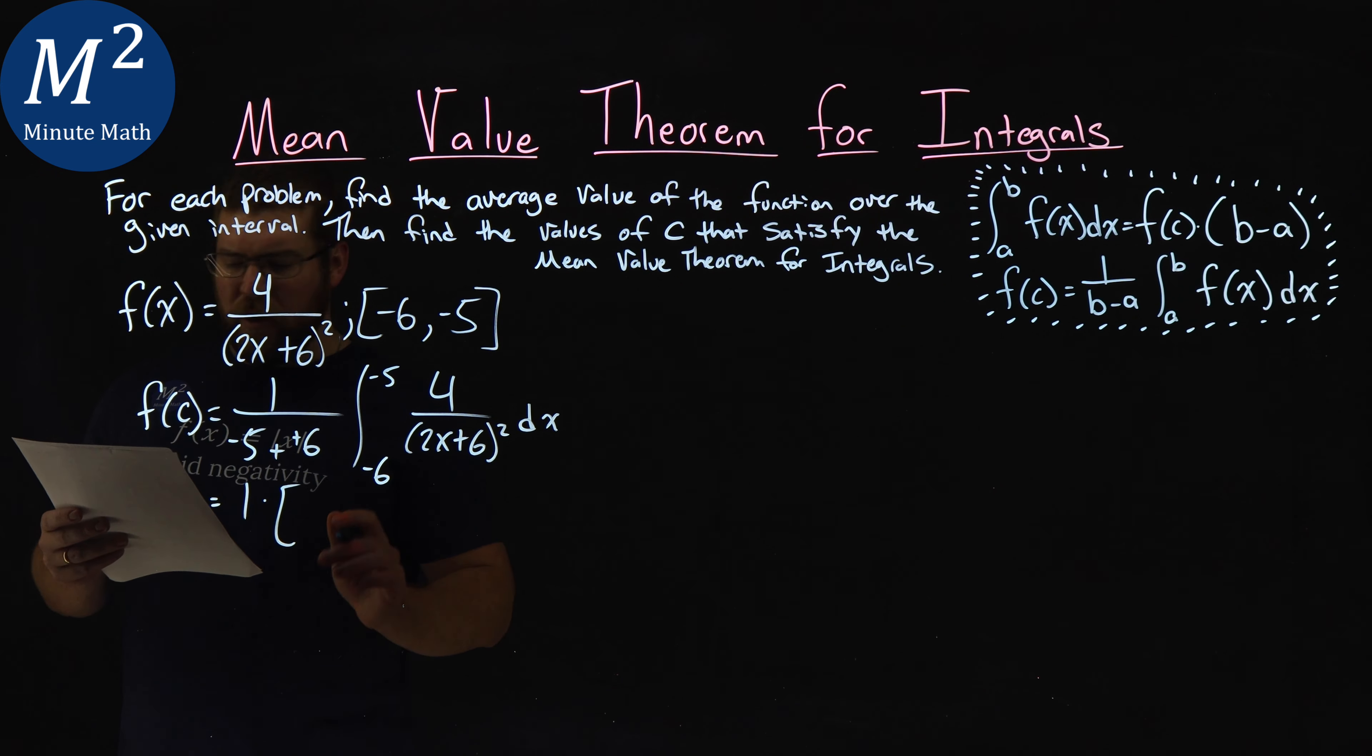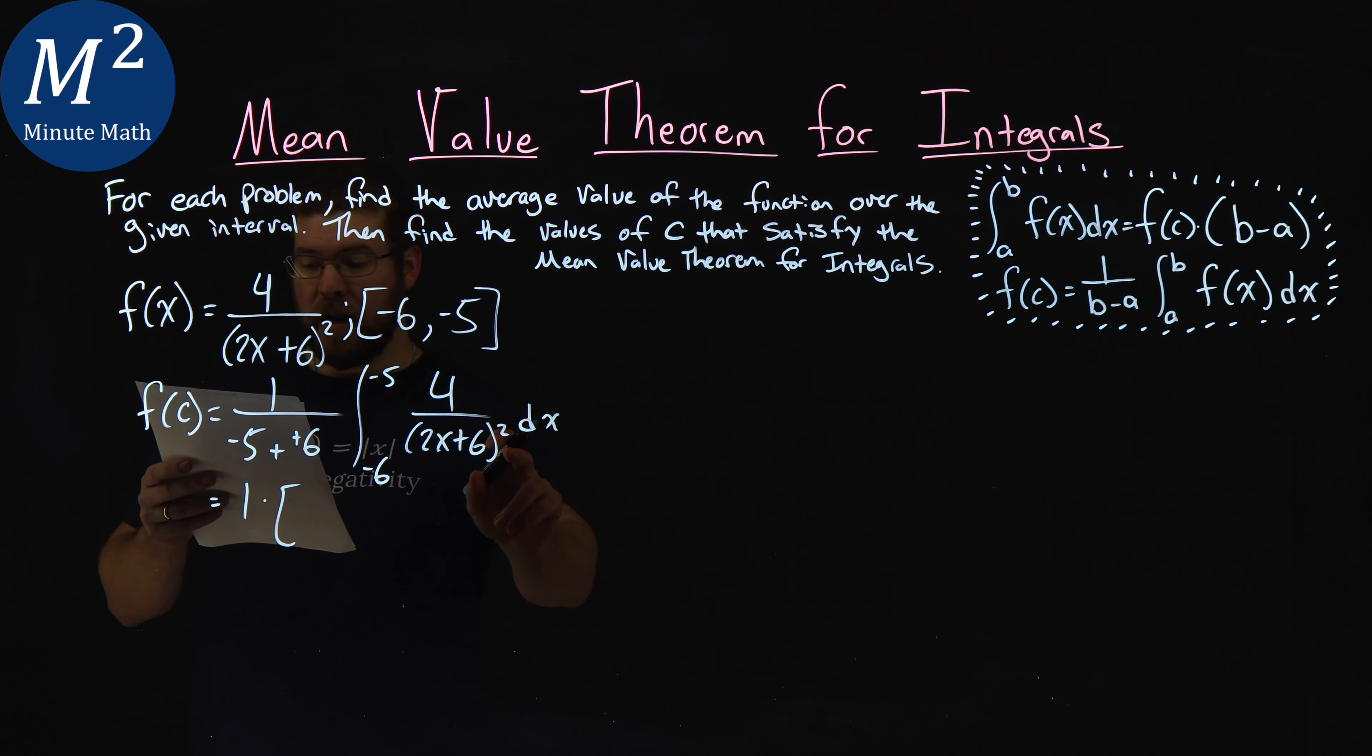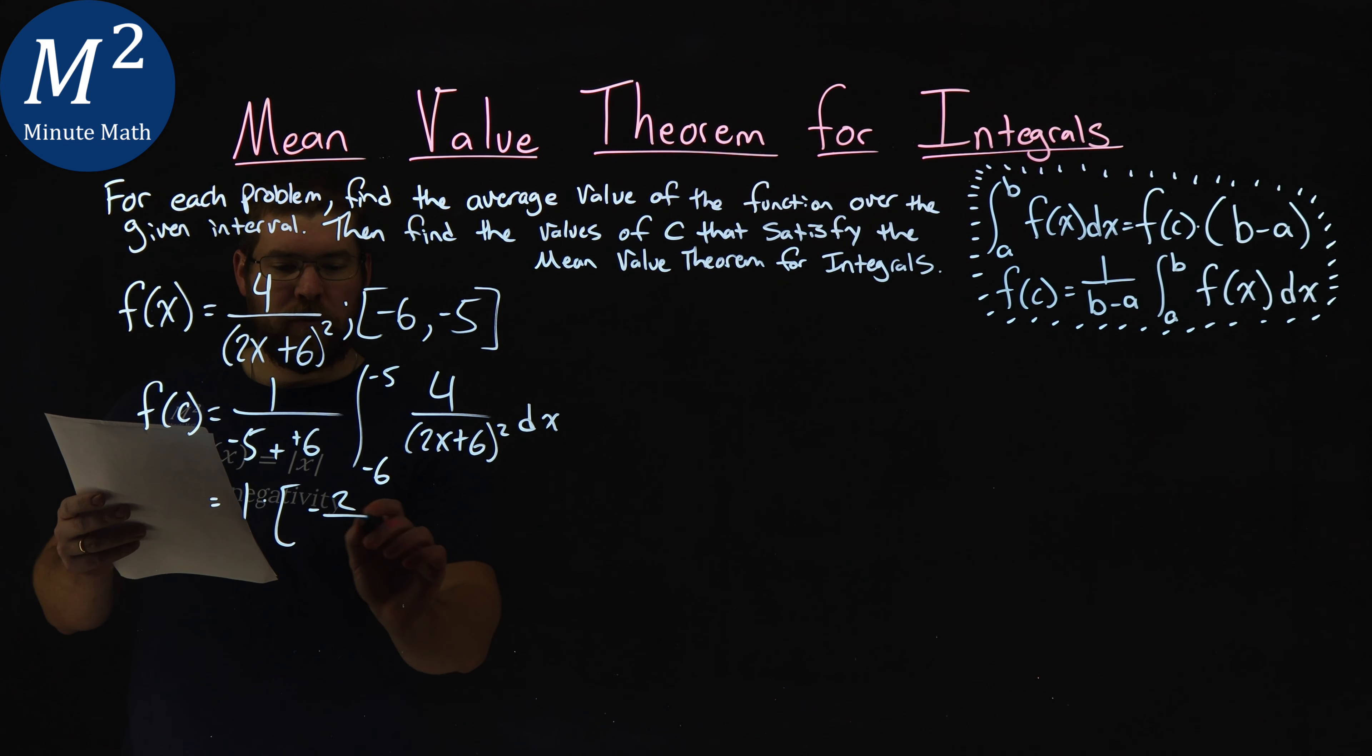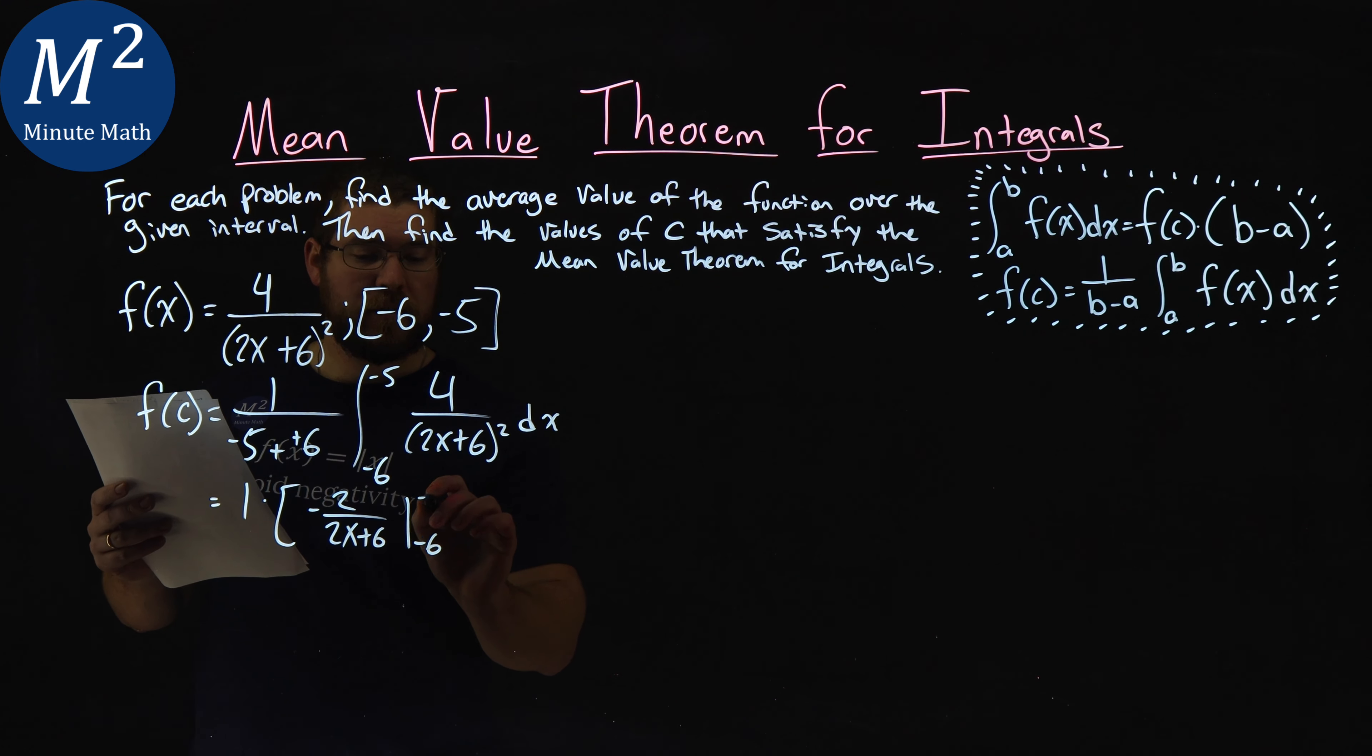Then, I found the integral here for you, and the integral of 4 over 2x plus 6 to the second power of the denominator is a negative 2 over 2x plus 6. So the first power, excuse me, so just 2x plus 6. And we're integrating this from negative 6 to negative 5.